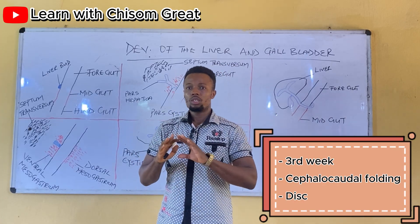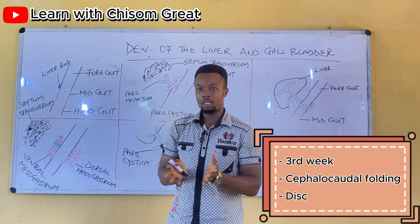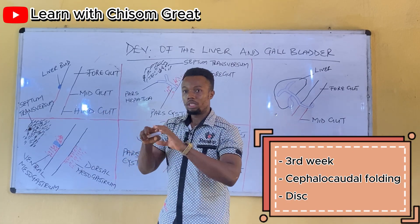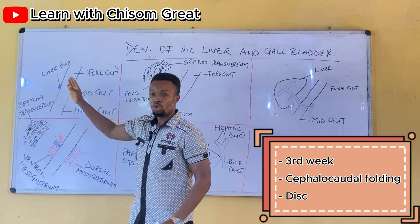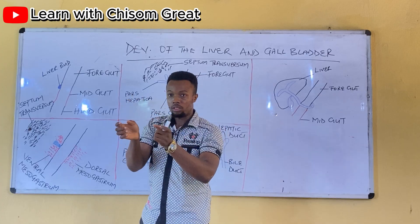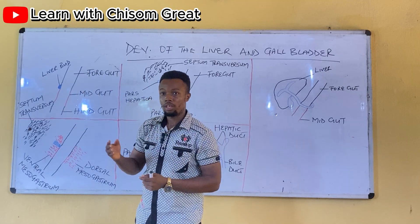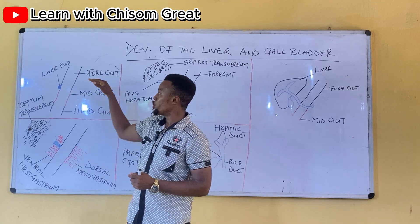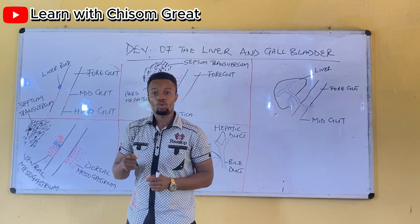Around the third week, something happened in the developing embryo. Because of this folding, the gut of the embryo is divided into three. Initially, the embryo is like a disc, but after the folding, this gut is divided into three: the foregut, the midgut, and the hindgut. Each of these guts gave rise to certain structures in the body.